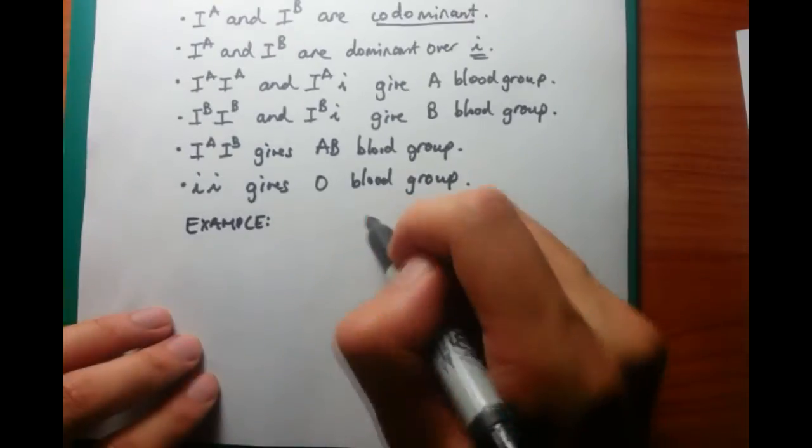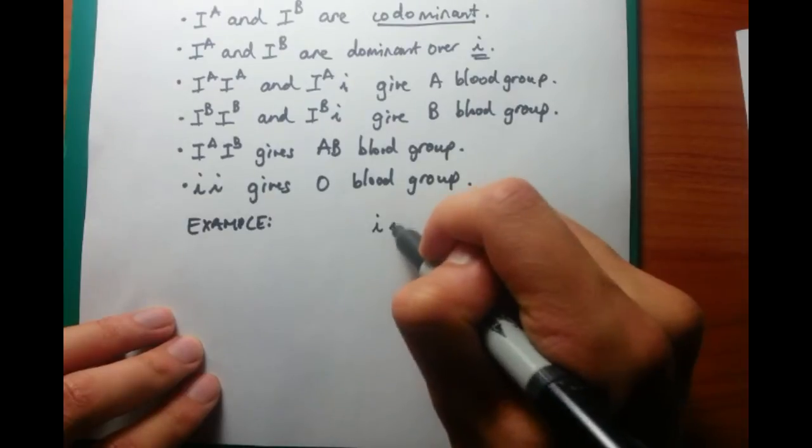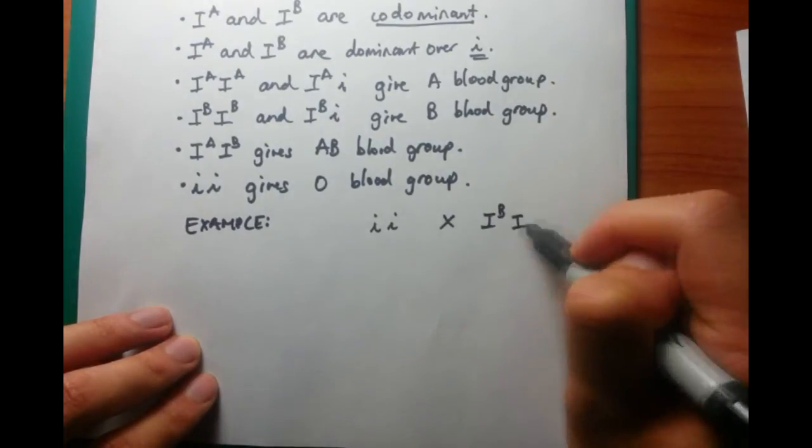And then go through that for B blood group, AB blood group, and O blood group. And that's how you get those easy marks.